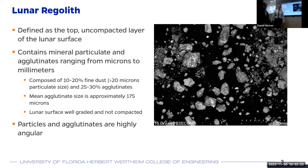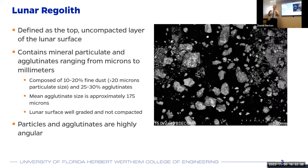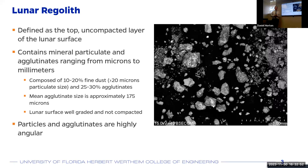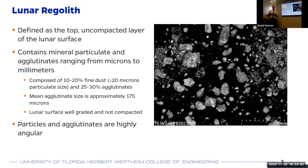To begin to understand the problem of plume surface interaction, we need to understand the composition of the lunar soil. Lunar regolith is defined as the top uncompacted layer of the lunar surface. The size of the particles ranges from microns to millimeters. You have mineral particles and a lunar-surface-unique particle known as an agglutinate, which is a combination of mineral particles bound together by a glassy matrix phase. The lunar soil is well graded, meaning there is a wide variety in particle size, as seen in this soil sample taken from the Apollo mission. Additionally, the particles are highly angular as a result of the lack of lunar atmosphere and atmospheric erosion.